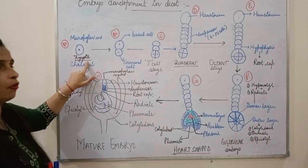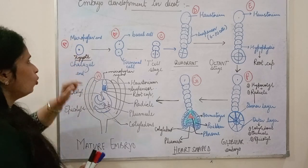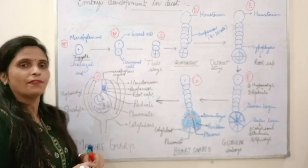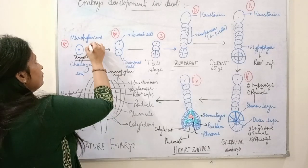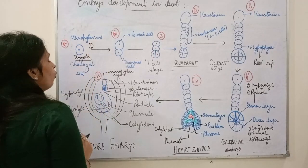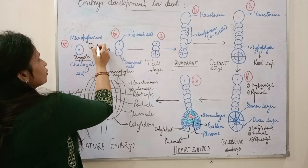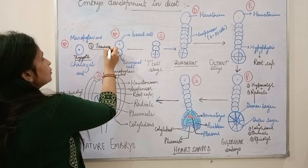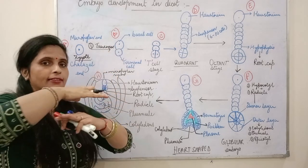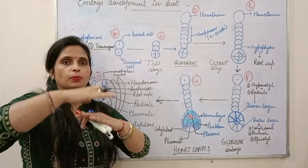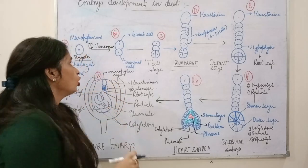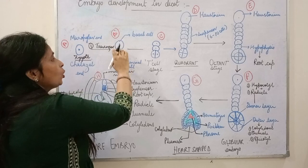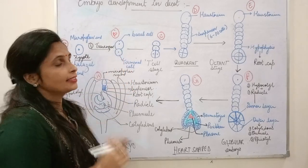And there is a zygote formation. This zygote undergoes division for the formation of embryo. The first division is an unequal transversal division, which means horizontal — two unequal cells are made.